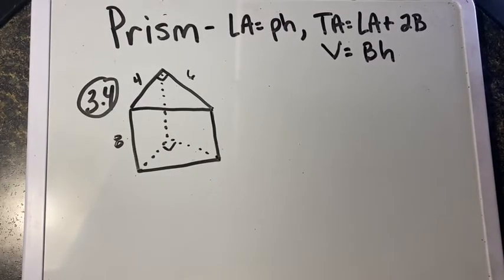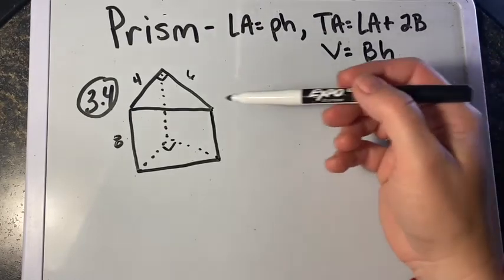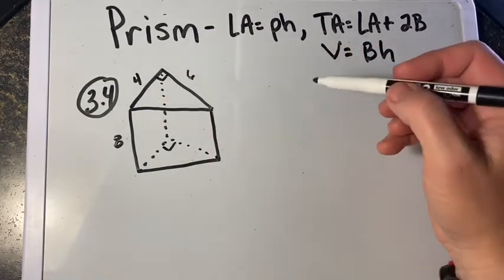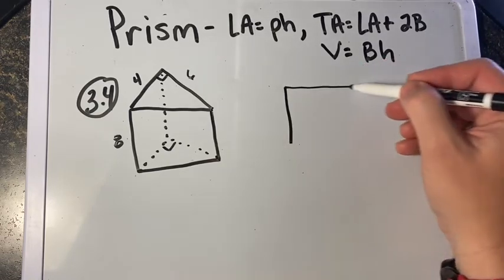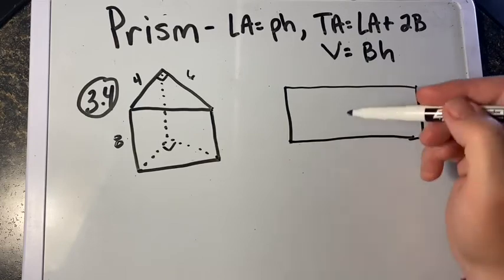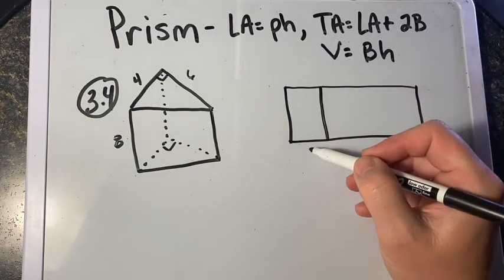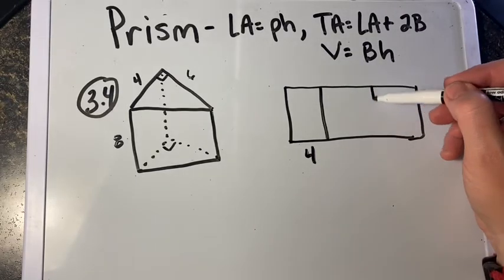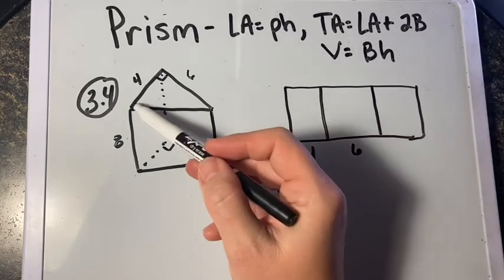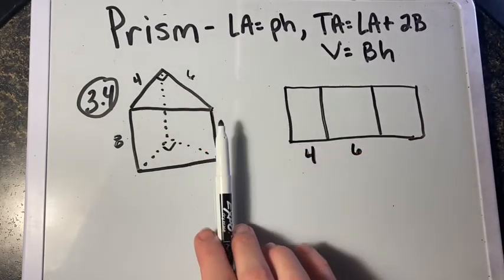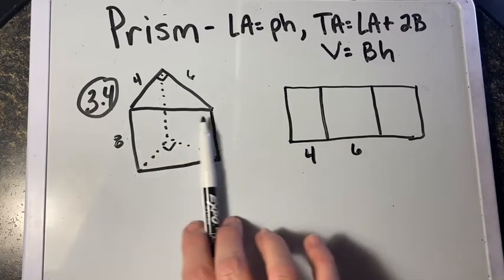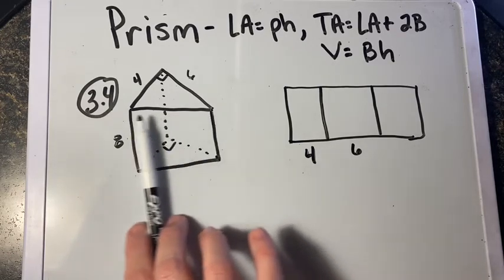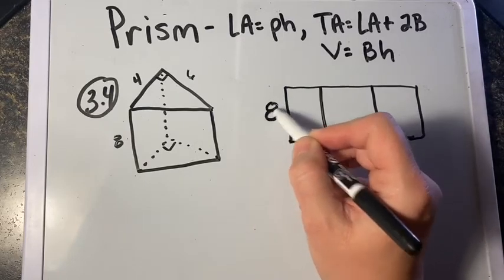Now let's take a look at problem 3.4. We're given a right triangular prism. Just like the other problem, the first thing we want to do is unfold it. When we unfold it, we are given a 4-foot space and a 6-foot side, but we're not sure what the length of this third lateral face is. We do know that it is 8 feet high.